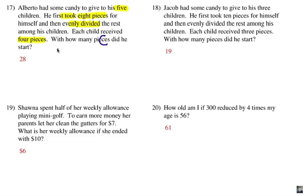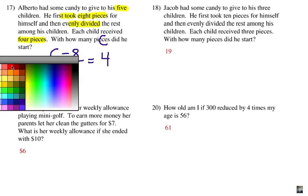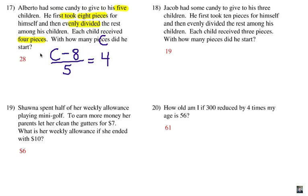So, we start with a total number of pieces of candy and it says that he took eight pieces for himself. So, we're taking eight out of that collection. That's a subtraction. Then he evenly divided the rest. Okay, that means that we're going to divide that by five. Now, the result would be four for each person. Alright, so what are we going to do first? Well, we're going to make sure that we get rid of this division here on the left by multiplying. Okay, so we're going to multiply both sides by five.